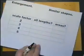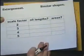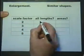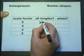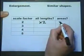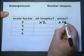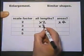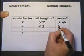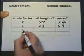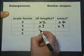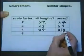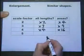Putting that into a table: enlarge by scale factor two — lengths twice as big, area four times as big. Enlarge by scale factor three — lengths three times bigger, area nine times bigger. Enlarge by scale factor five — lengths five times bigger, area twenty-five times bigger.